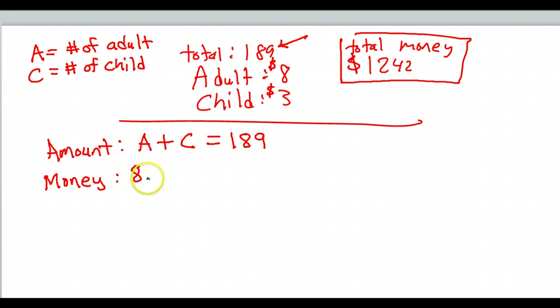So, the money equation is going to start off like this. Eight dollars per adult ticket, that's the money that you get from adult tickets. Plus, three dollars per child ticket, that's the money you get from a child ticket. And that should equal the total amount of money. And they told us the total money was $1,242.